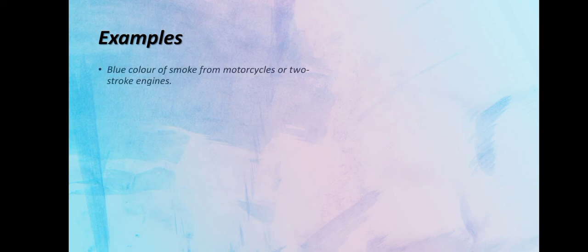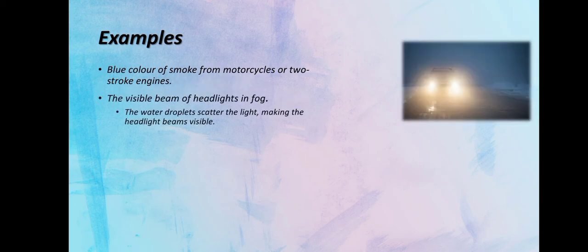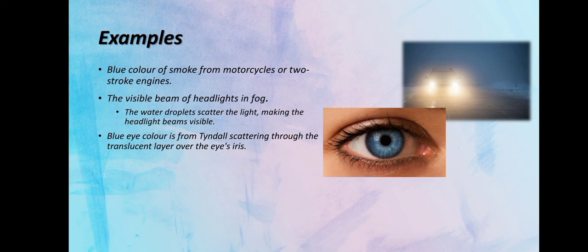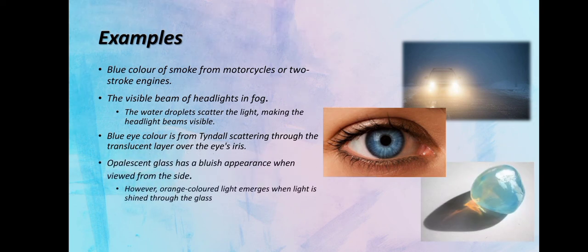Here are a few examples for Tyndall Effect. Blue colour of smoke from motorcycles or two-stroke engines. The visible beam of headlights in fog. The blue eye colour is from Tyndall scattering through the translucent layer over the eye iris. Opalescent glass has a bluish appearance when viewed from the side. However, orange coloured light emerges when light is shined through the glass.